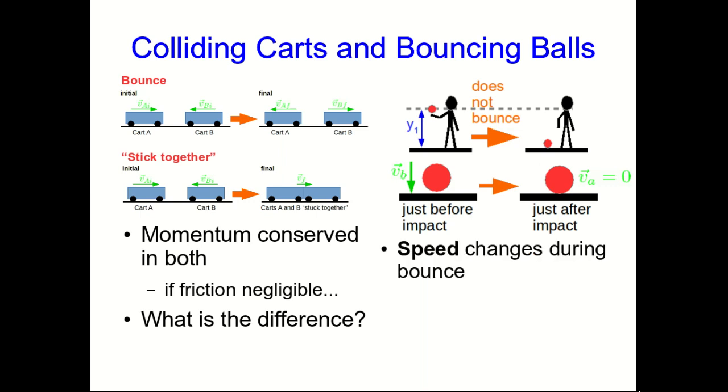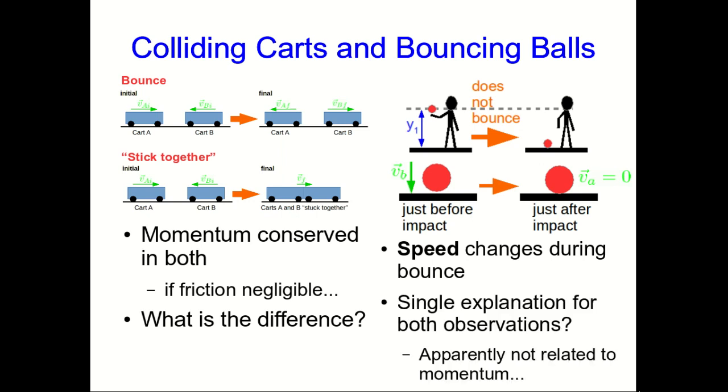Depending on the nature of the interaction between the ball and the ground, the speed can change during the bounce by different amounts. So we've got observations about different kinds of cart collisions and different kinds of ball bounces. Can we come up with a single explanation for both? And we can guess that it's not something to do with momentum.